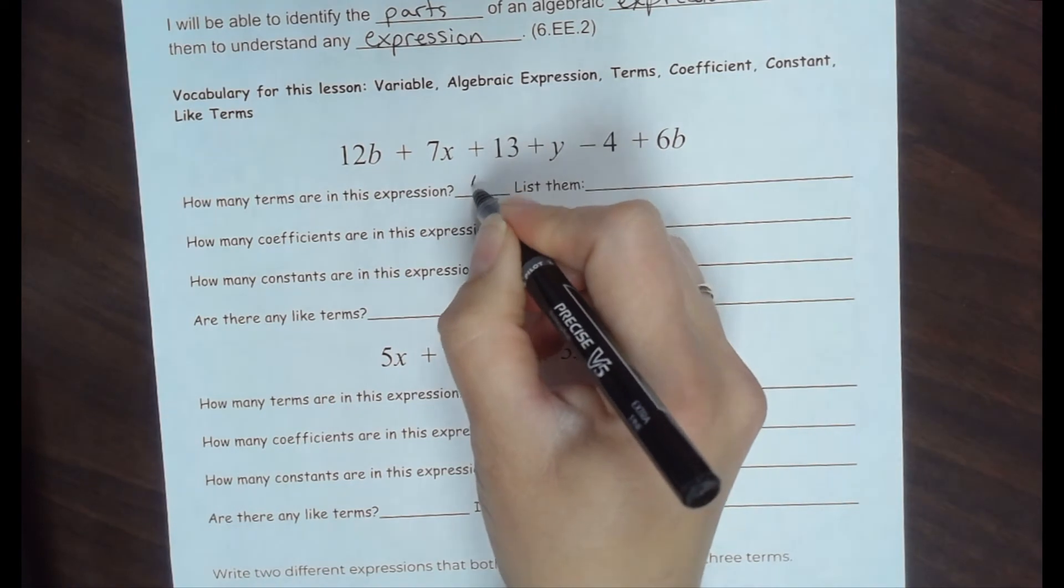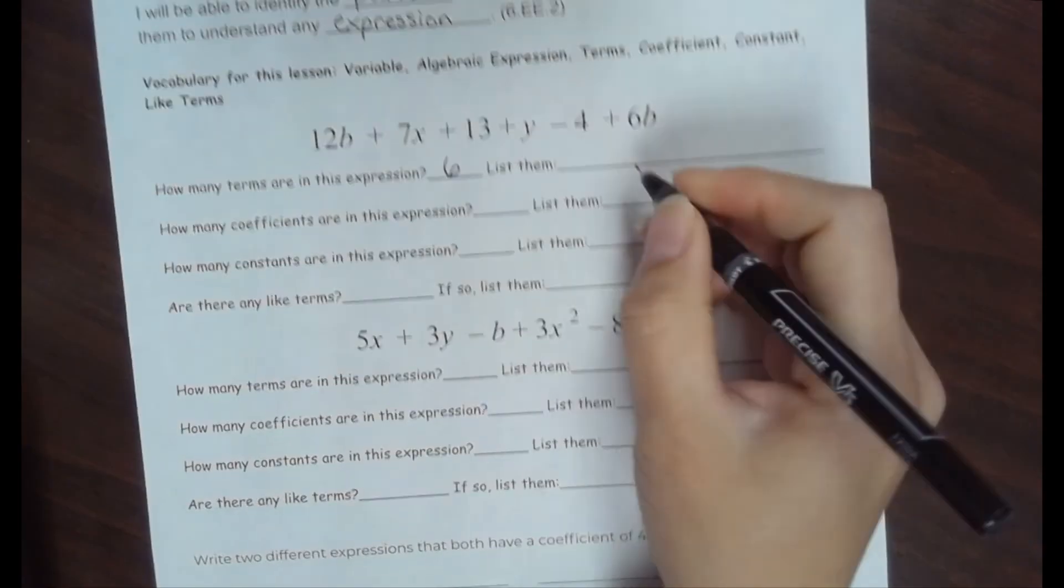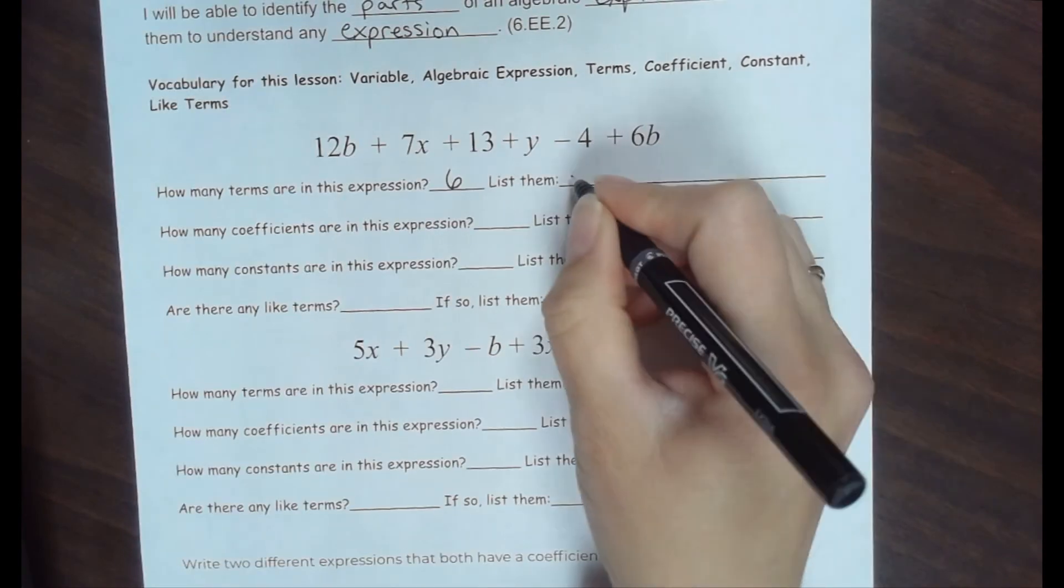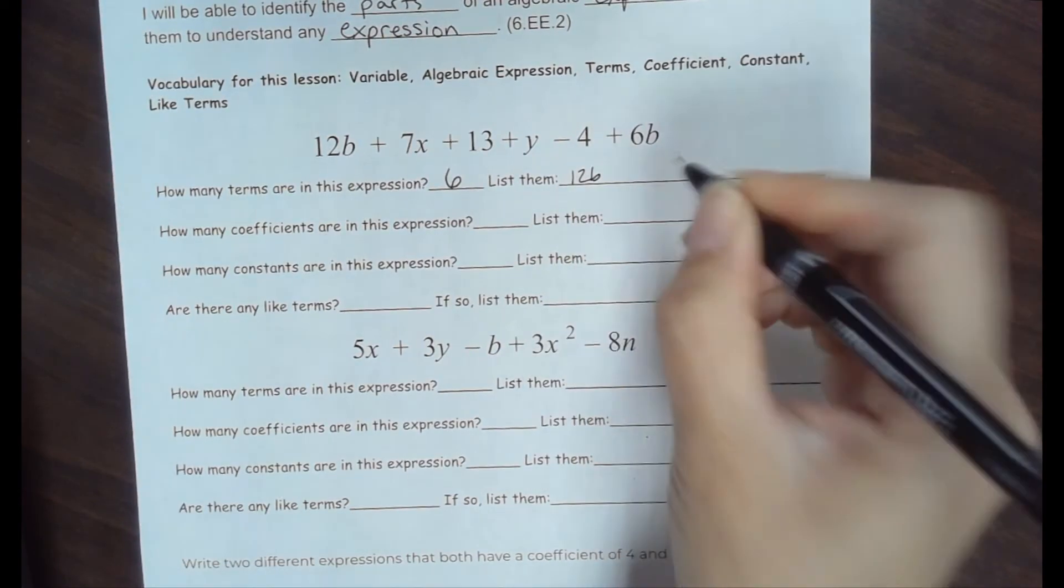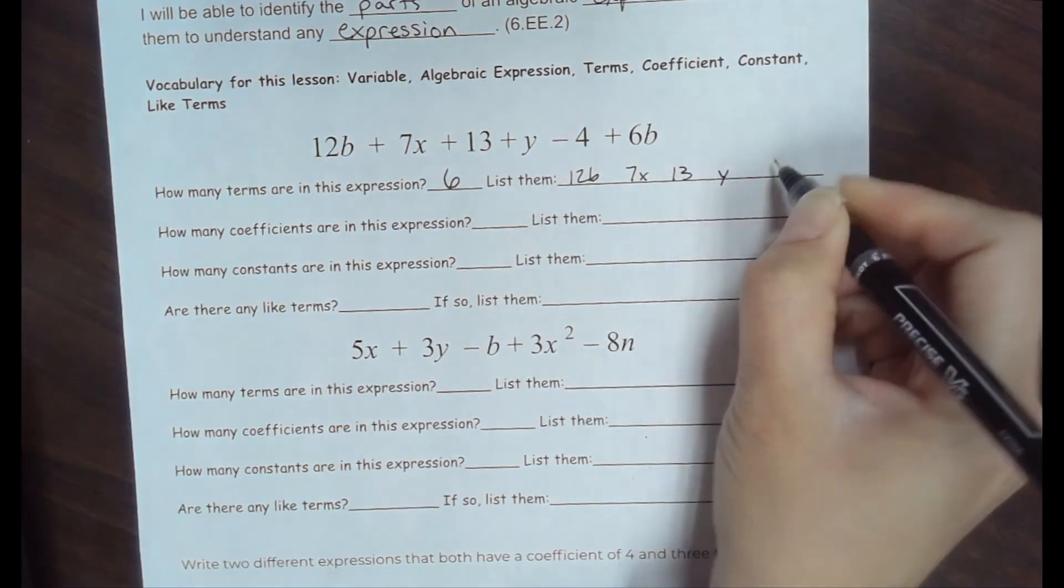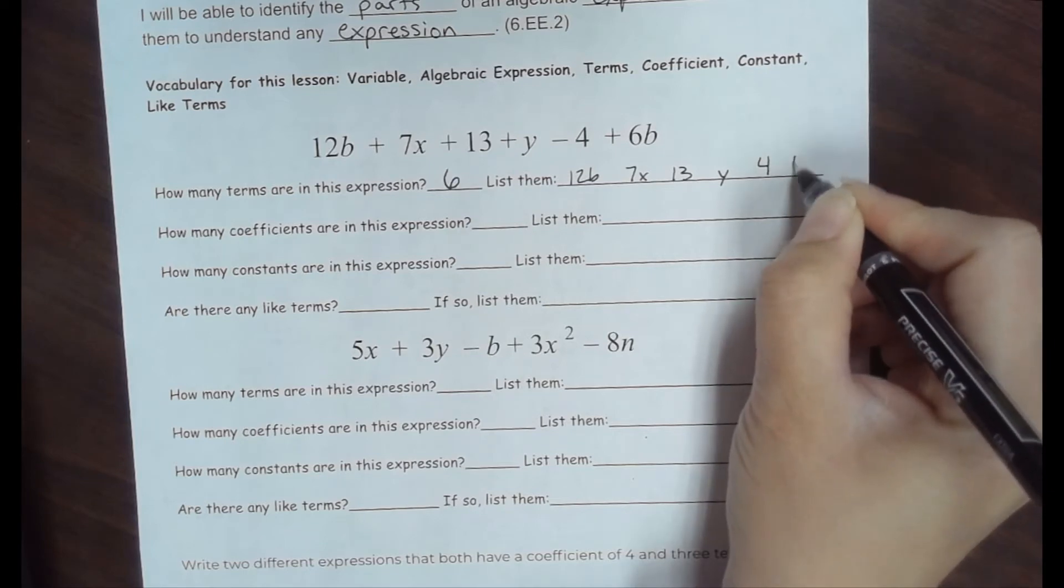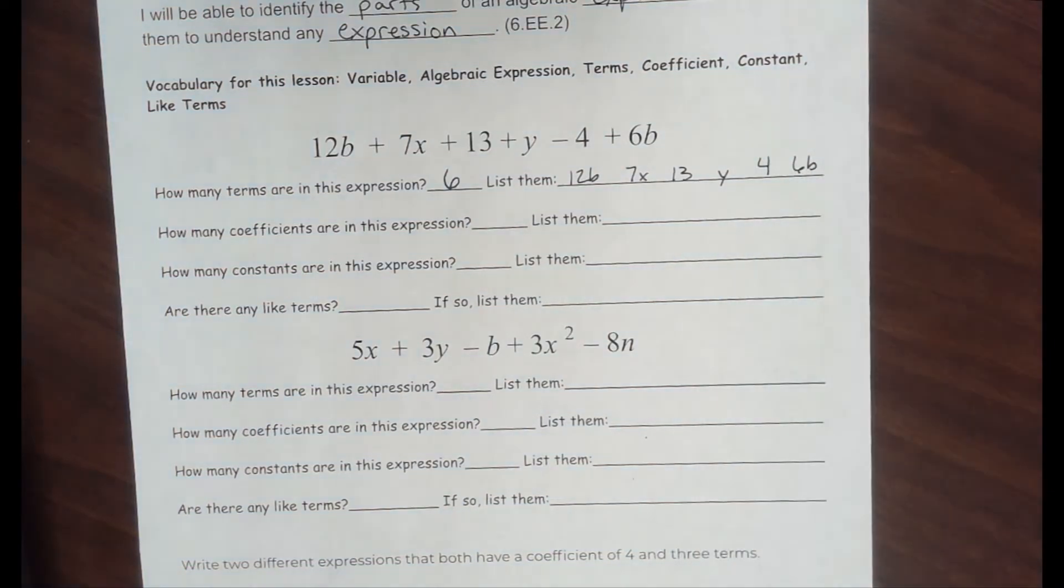There are 6 terms in this expression. If we list them, then we have 12b, 7x, 13, y, -4, and 6b.